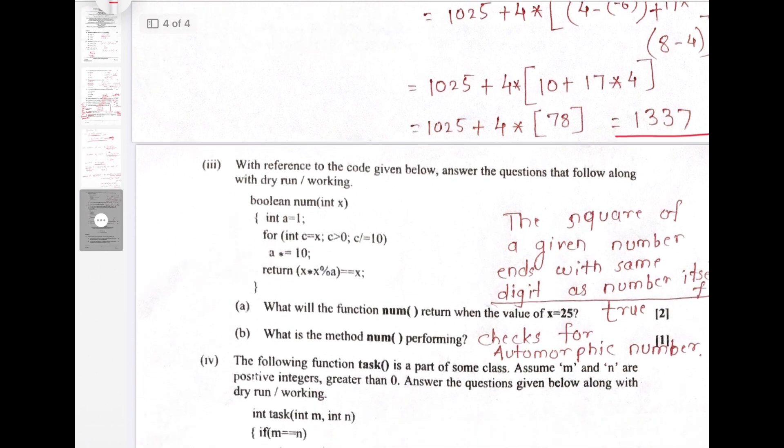Now I have to find out output of this function. When I solve this, the answer will come true. If I send X variable as 25, your answer will be true. What this function does? This function calculates or checks whether the number provided is automorphic number or not. What is automorphic? The square of a given number ends with the same digits as the number itself. In examination, if you don't remember this is called automorphic, you can simply write this function checks whether square of a given number ends with the same digits as in the number itself.